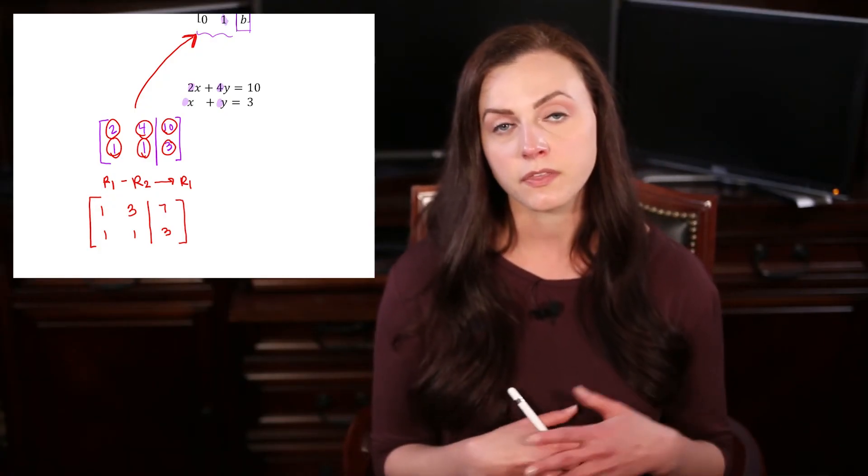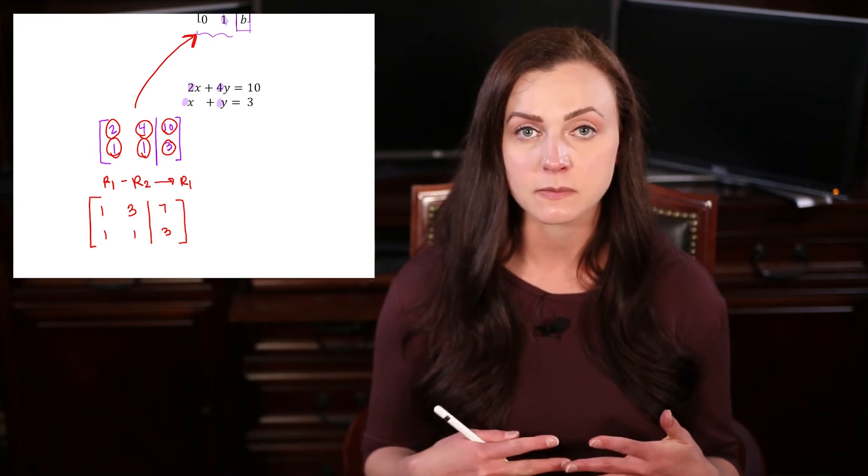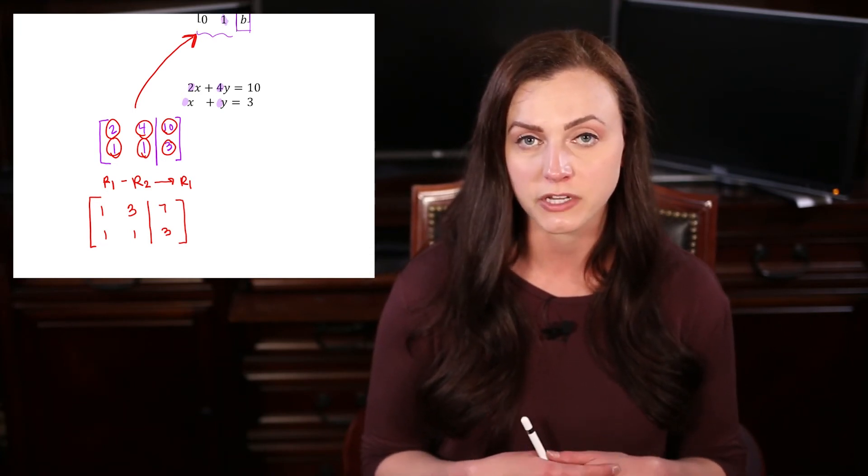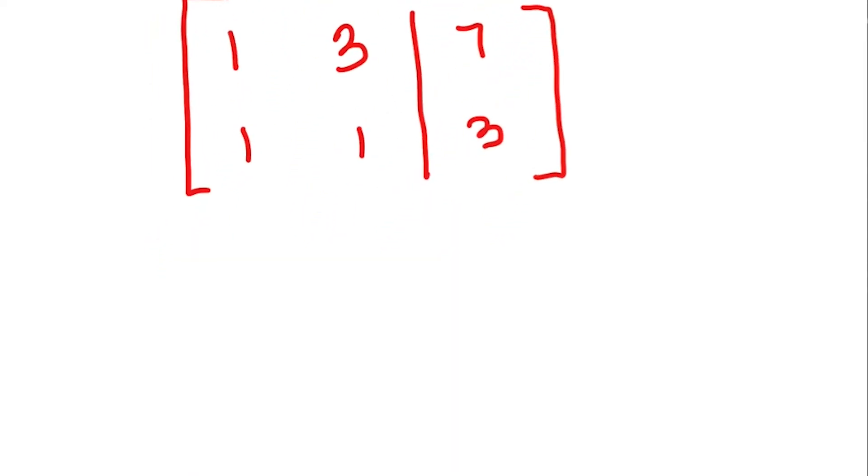Now, with these row operations, you can add rows together, subtract rows, you can multiply or divide by a constant, and you can switch rows. So if I look at this new matrix now, I want this number to be a 0. It actually works to do subtraction again, because 1 minus 1 is 0, and this time we're going to use that to change the second row.